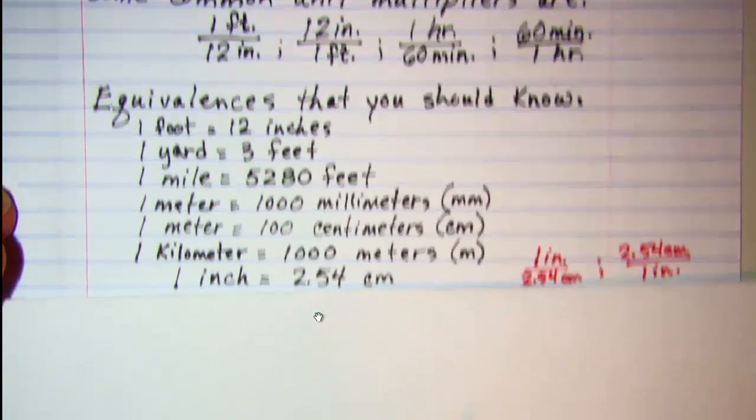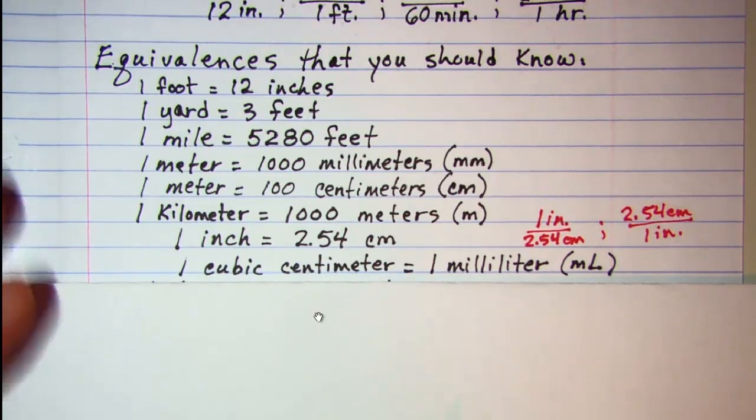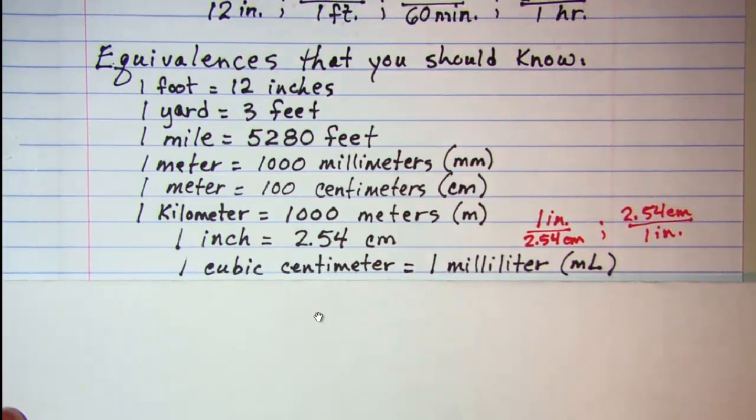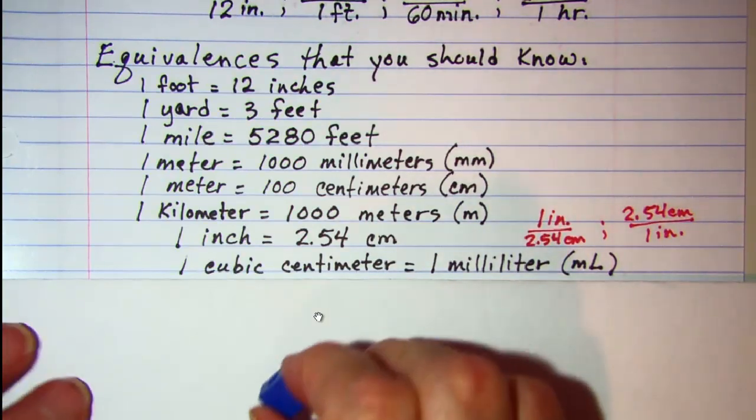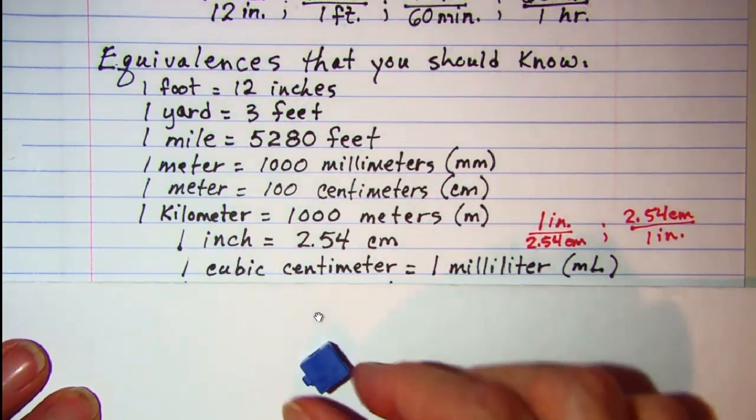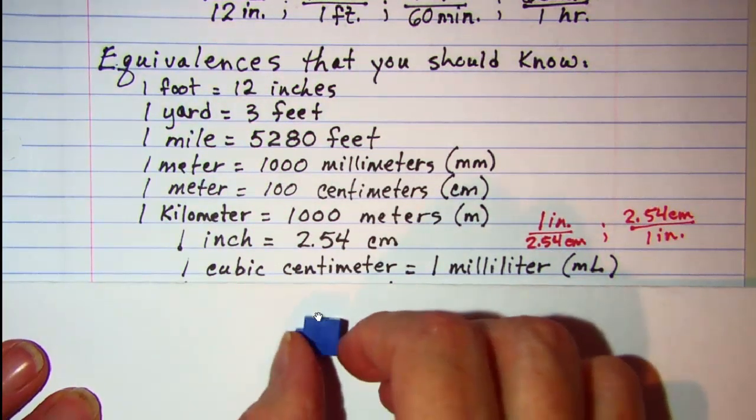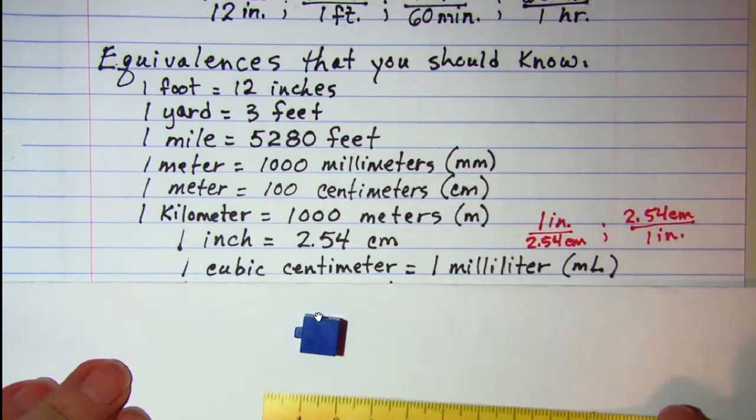Another one that is very handy to remember is one cubic centimeter is equal to one milliliter. I brought some things to help you see that. This is a cube and it measures one centimeter.